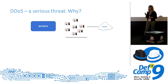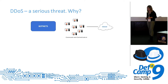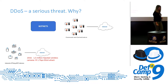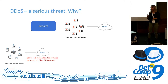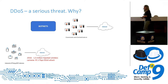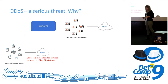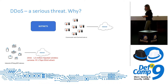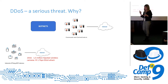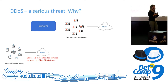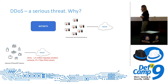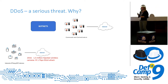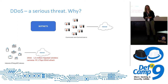Botnets have become more and more resilient to be taken down. It is even more dangerous because they can now be comprised of IoT devices. Practically any appliance you have at home can have an IP, and there are a lot of users who use the default settings, the default password, and don't make proper firewall rules in front of IoT devices. In 2016, 1.5 million wireless cameras were infected and used to carry out a 1 terabit per second attack.